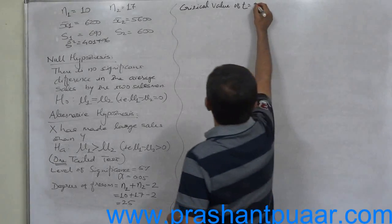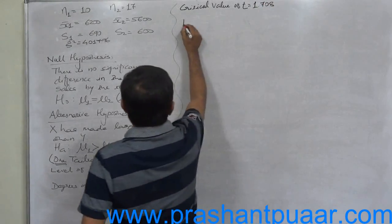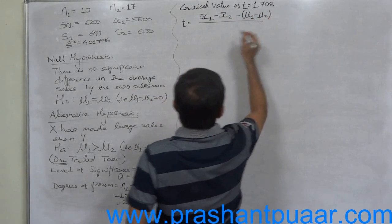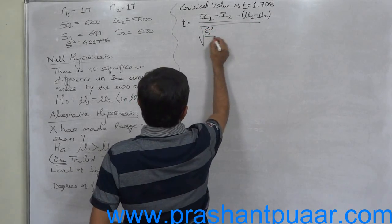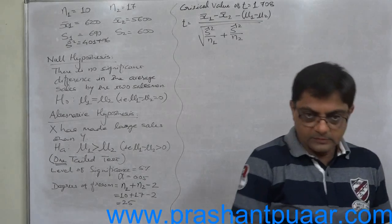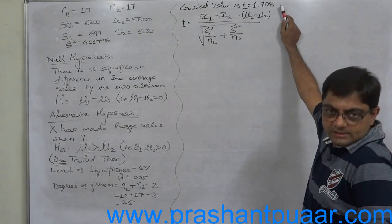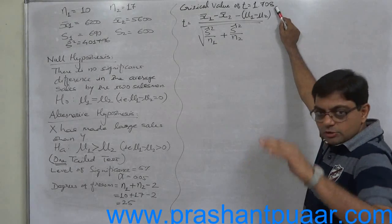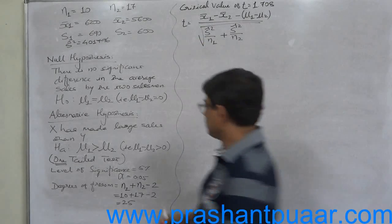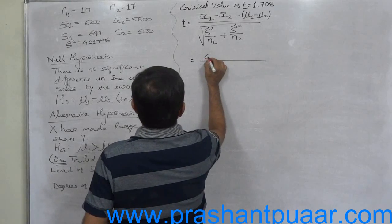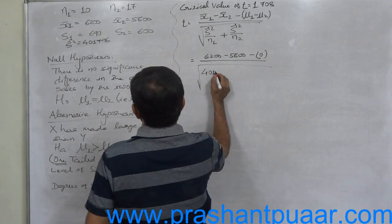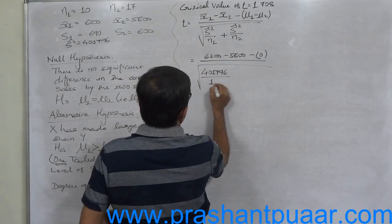T equals x bar 1 minus x bar 2 minus mu1 minus mu2, all upon square root of S cap square upon n1 plus S cap square upon n2. Smaller the critical value, tougher the test, because as critical value becomes low, the possibility of calculated value greater than critical value increases. 6200 minus 5600 minus 0 upon under root 401,796 divided by 10 plus...